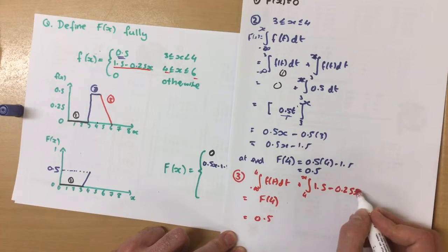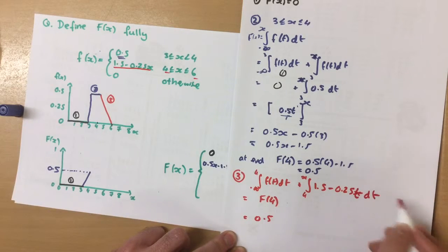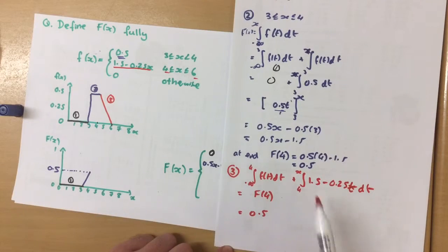Using the function 1.5 take 0.25x, sorry, t. Okay, so we're always using t here rather than x, so we can substitute x in.